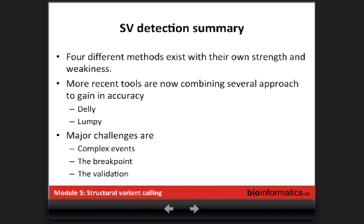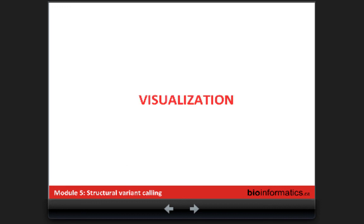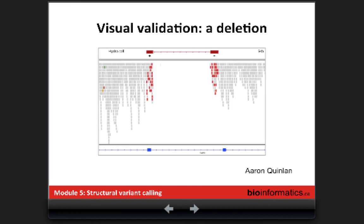When we call SVs we use many tools together — a kind of ensemble approach — using several callers with different approaches and seeing what is consistent between them. What is complicated is not just making the calls but sometimes understanding what your caller has output, because many events will be marked as an uncertain type of SV due to complex regions. The challenge is also to find the exact breakpoint and to validate — validating a deletion is easy with two PCR probes at each border, but validating a large insertion is complicated.